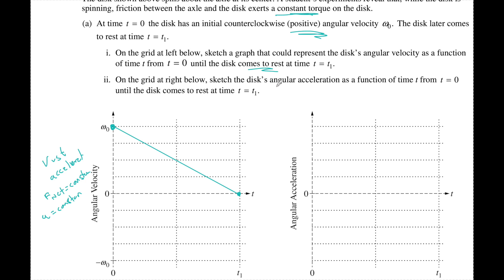On the right, sketch the disc's angular acceleration as a function of time. Well, once again, if I have a constant F net, I have an acceleration, but it needs to be negative. So draw it anywhere. This is the negative quadrant. Doesn't matter where you draw it. It's going to be a straight constant acceleration.